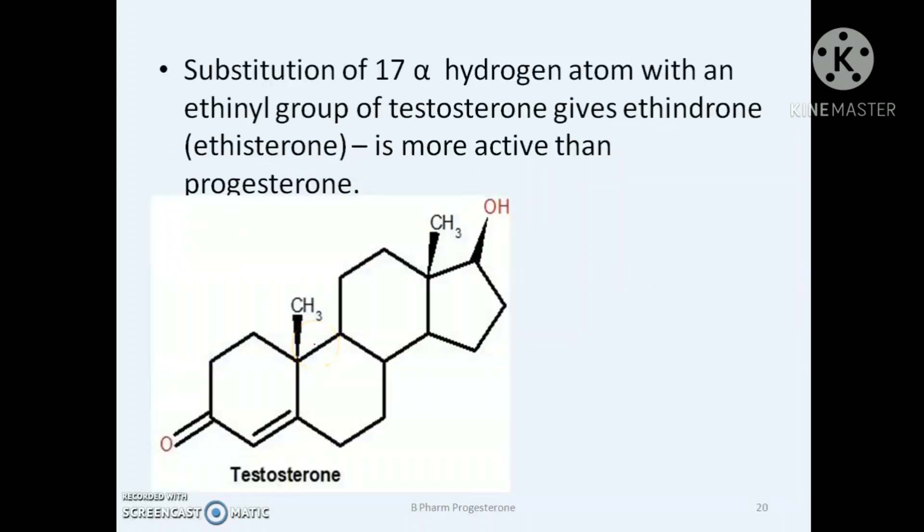Example is ethindron or ethisterone. Here the 17-alpha hydrogen atom is replaced with ethinyl group to form ethisterone. It is more active than progesterone.